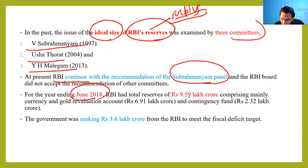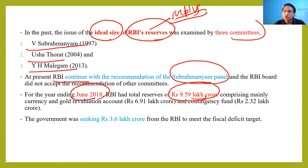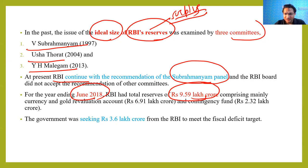In June 2018, the RBI reserve was 9.59 lakh crores — a very big amount. The central government has a fiscal deficit, meaning total expenditure is more than total receipts. Because of this fiscal deficit, the central government wants to receive some money from the RBI. As of June 2018, the total currency and gold revaluation reserves amount to this large figure.